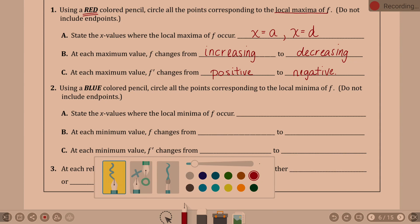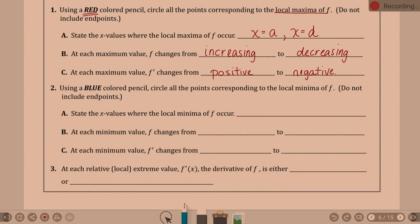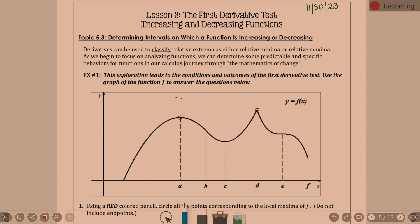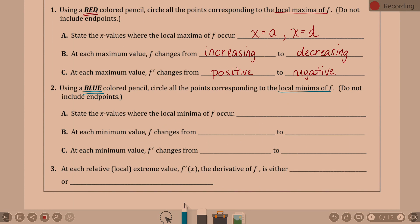Whatever you're using for blue. Using a blue colored pencil, circle all the points corresponding to local minima. C, c, c. Nothing else. I said don't use endpoints. B and E are not extrema. State the x values where the local minima occur. X equals c.